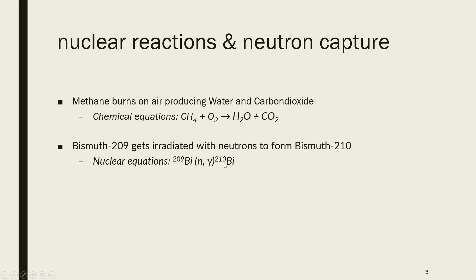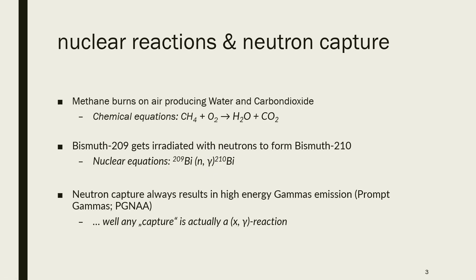So we are talking about neutron capture. This will always result in a high-energy gamma photon being emitted. And what I'm trying to say is that a neutron capture is never just neutron coming in, but always a gamma photon coming out. It can be any capturing process. If you have an alpha capture or a proton capture, this will be an alpha gamma reaction or an N-gamma reaction or a P-gamma reaction.